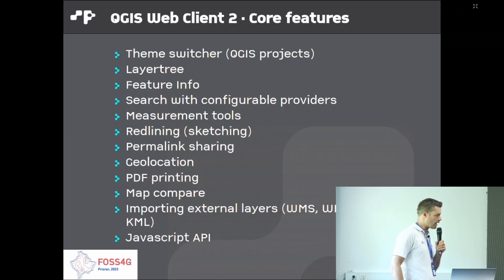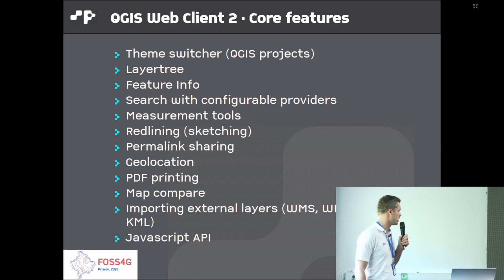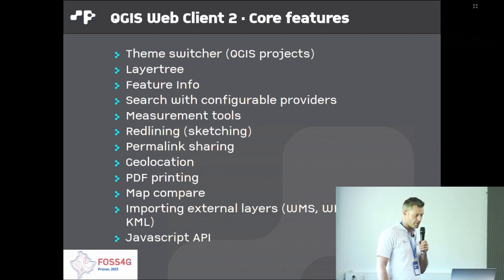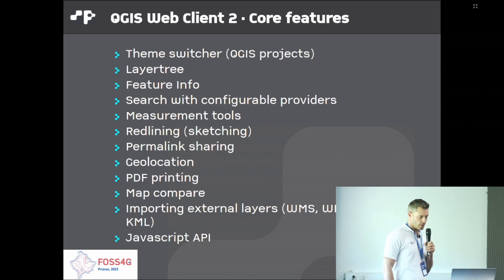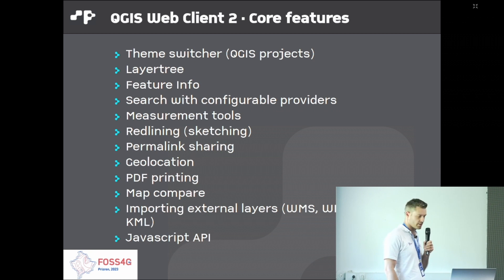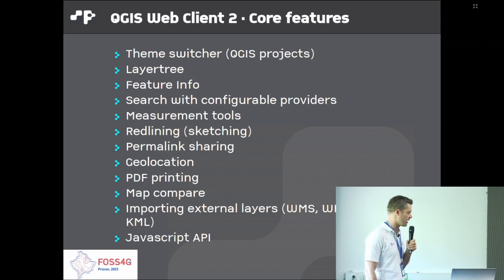The core features include a scene switcher, a layer tree, the ability to query features and get feature info, search with customizable search providers, measurement tools, sketching on the map, and creating and sharing permalinks.